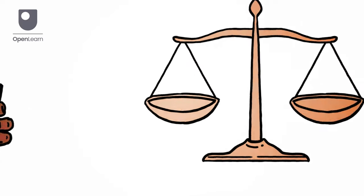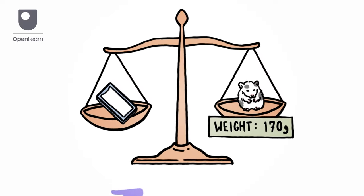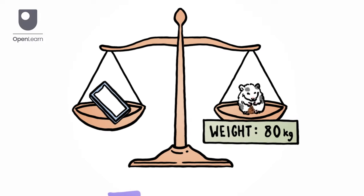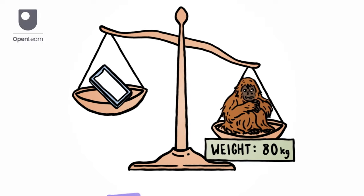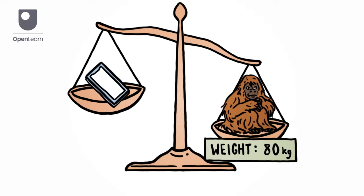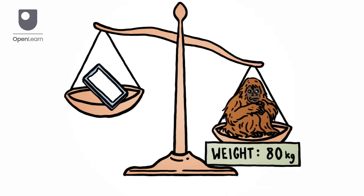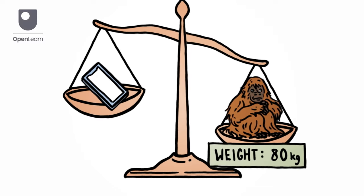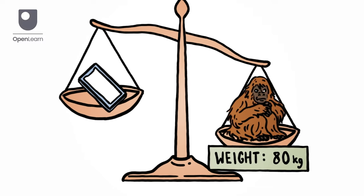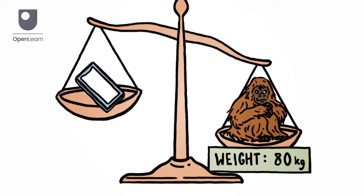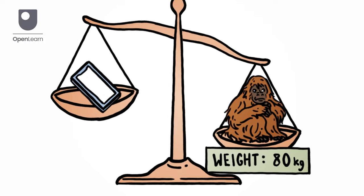Despite weighing only 170 grams, a brand new smartphone generates, on average, around 80 kilograms of carbon equivalent emissions, which is about the same weight as an adult orangutan. These emissions come from material extraction, manufacture and distribution processes.